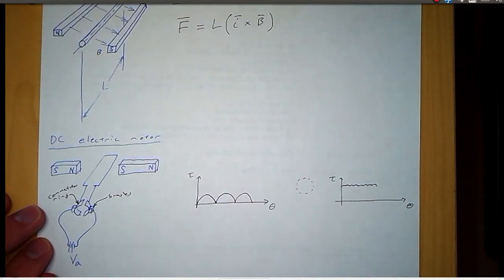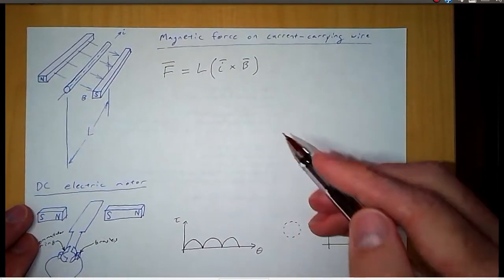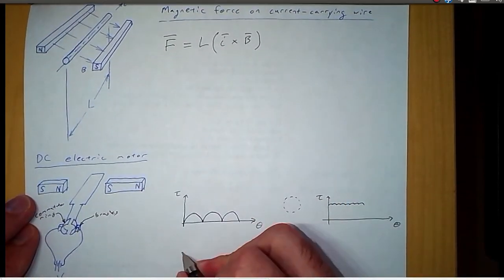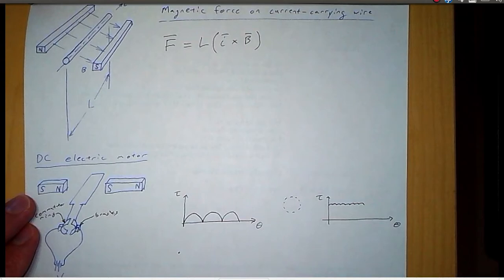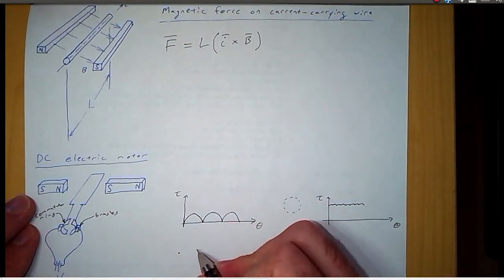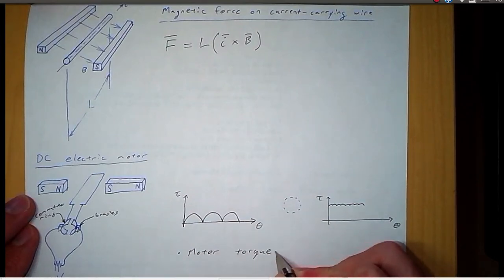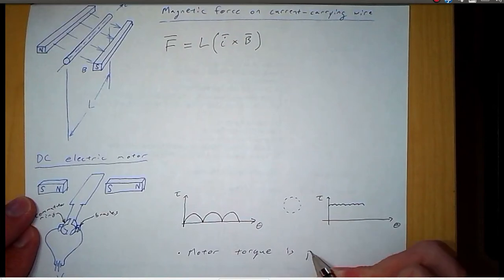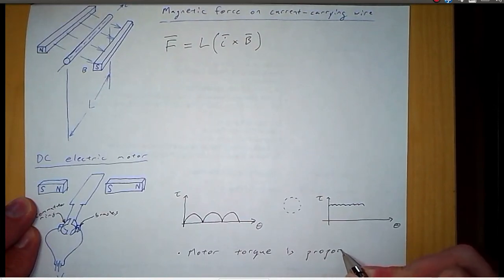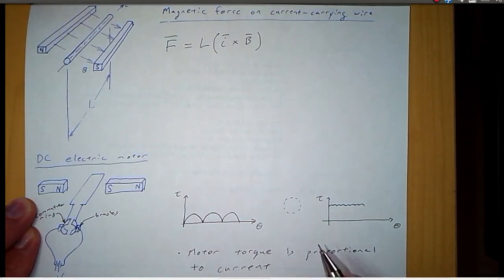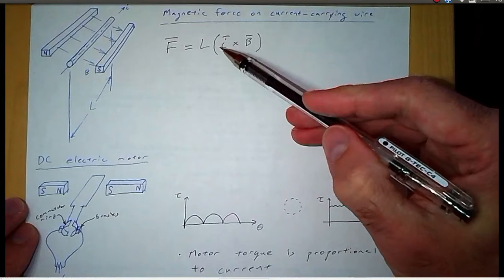One thing that can be seen from this equation is that neglecting the ripple, the motor torque is proportional to the current. So the force on the wire is proportional to the current.